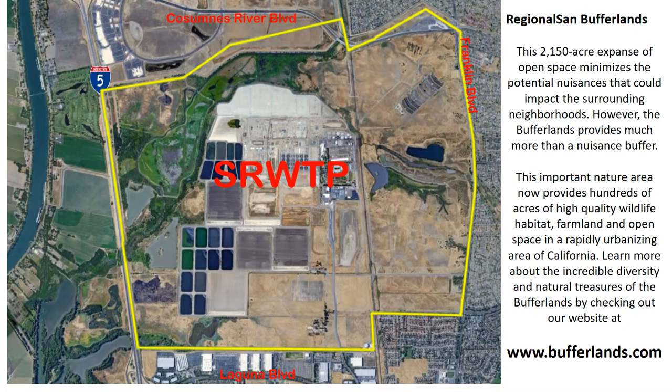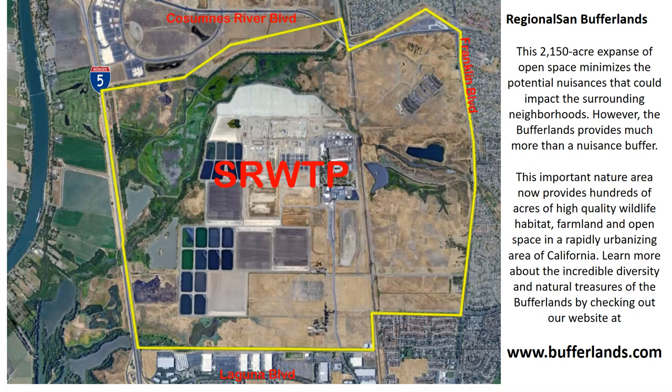Before I start talking about dragonflies I just wanted to mention a little bit about who I am. My name is Roger Jones. I've been a wildlife biologist at the Regional Sand Buffer Lands for about 30 years. The Regional Sand Buffer Lands is about 2,000 acres that surrounds the Sacramento Regional Wastewater Treatment Plant. Although it was originally intended just as a buffer, it's now proven to be much more — providing hundreds of acres of high quality wildlife habitat, farmland, and open space. You can learn more at www.bufferlands.com.